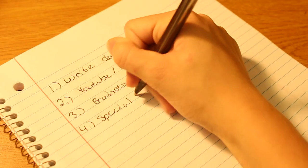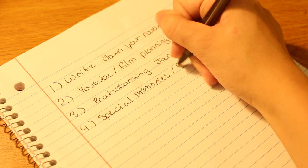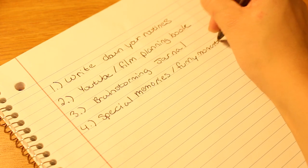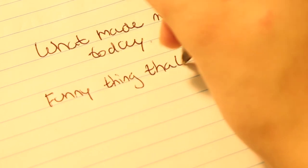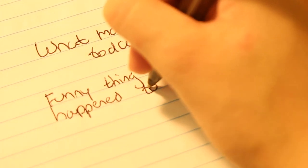Next is a special memories or funny moments book. I keep one of these and whenever I have a fun experience, something new, something funny happens, I write it down. So whenever I have an amazing day or something really funny that happens that I don't want to forget, I will write it down here. Then I can look at it later and remember what made me happy or laugh.